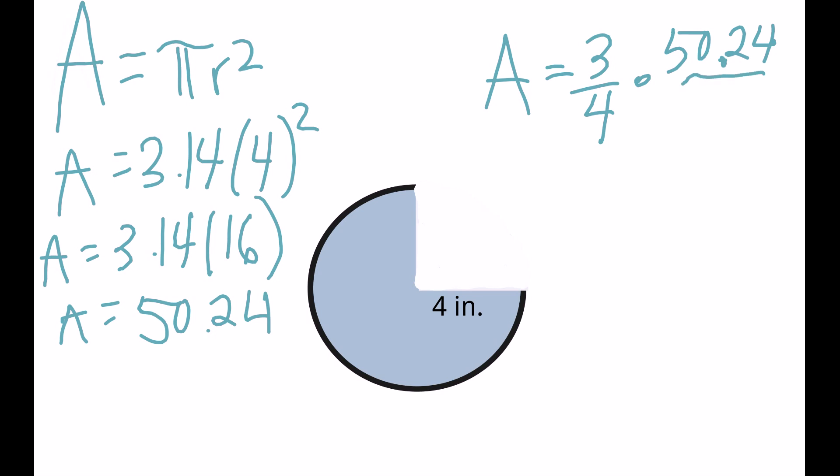I'm going to go ahead and throw it over 1, just to make it a little bit easier. So let's divide across. I get 3 times 50.24, which gives me 150.72. Divide that by 4, and our area is 37.68. Don't forget your units. We've got inches squared.